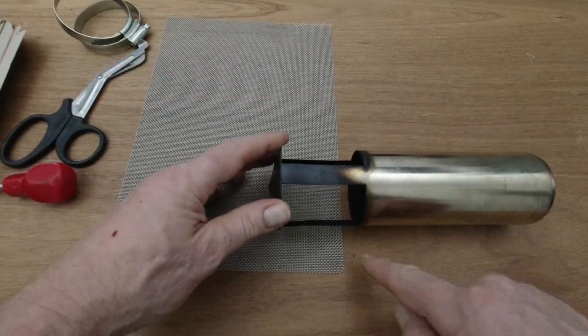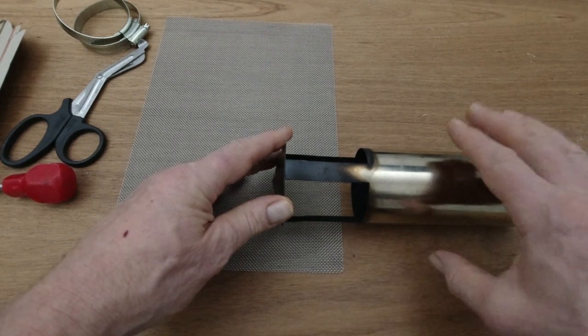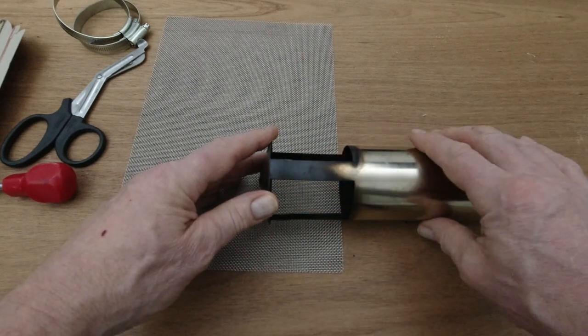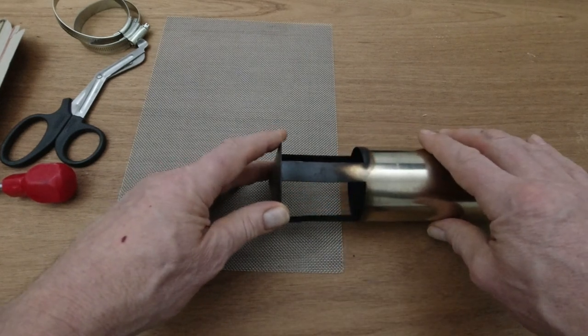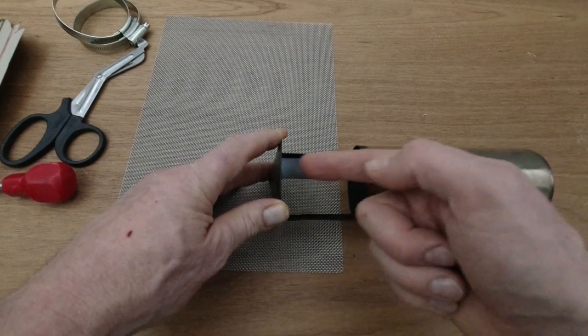My plan is to not totally fill this section with the mesh but to leave a little gap, maybe a quarter of an inch or so. That's because the sparks will fly up and hit the top, and the mesh should then stop them from flying around.